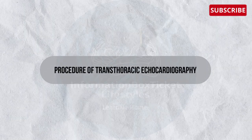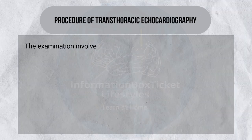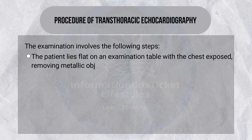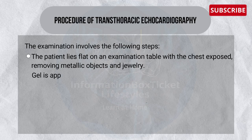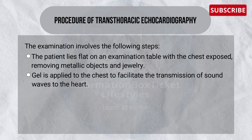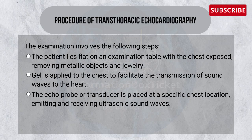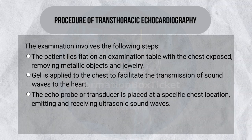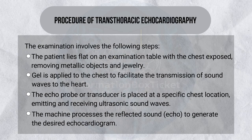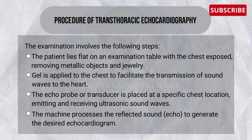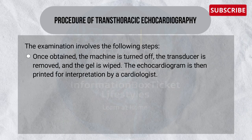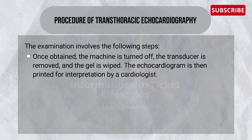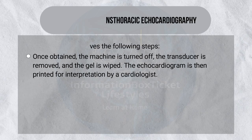Procedure of transthoracic echocardiography: The examination involves the following steps. The patient lies flat on an examination table with the chest exposed, removing metallic objects and jewelry. Gel is applied to the chest to facilitate the transmission of sound waves to the heart. The echo probe or transducer is placed at a specific chest location, emitting and receiving ultrasonic sound waves. The machine processes the reflected sound echo to generate the desired echocardiogram. Once obtained, the machine is turned off, the transducer is removed, and the gel is wiped. The echocardiogram is then printed for interpretation by the cardiologist.